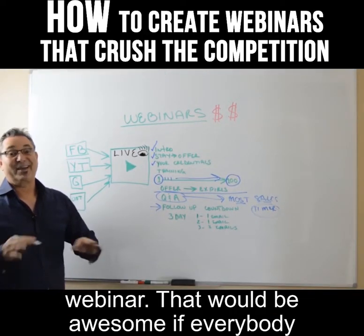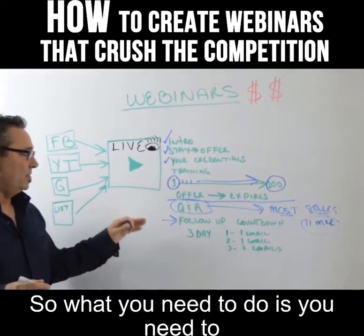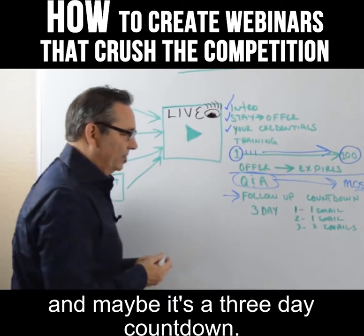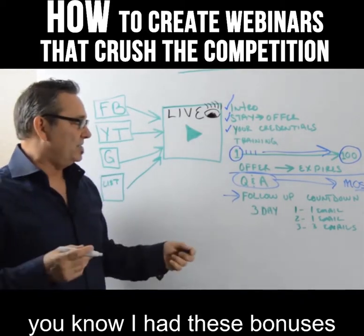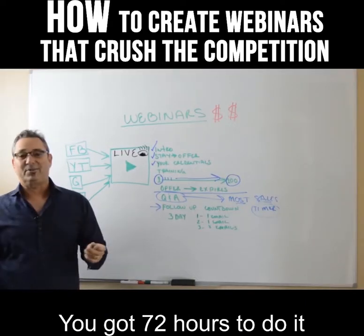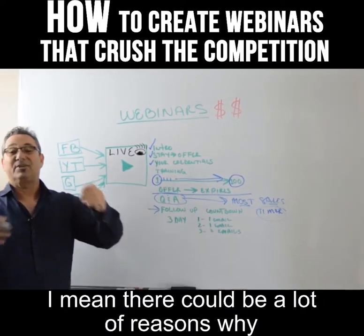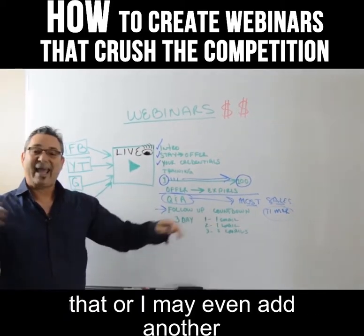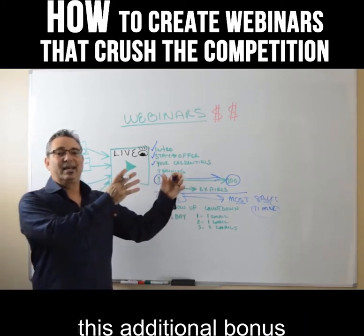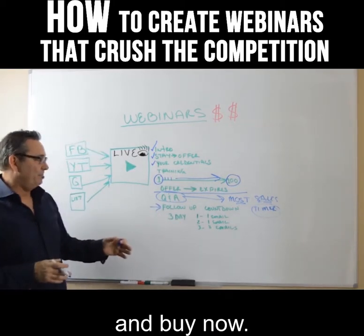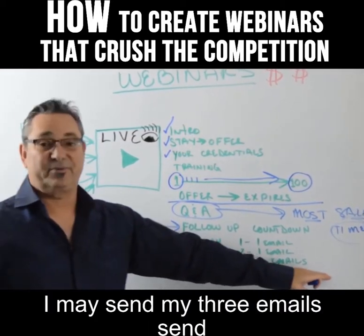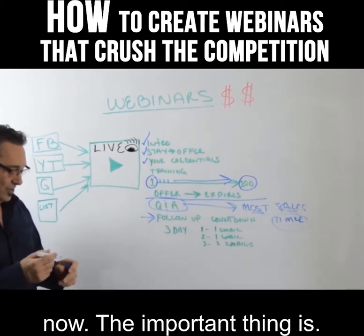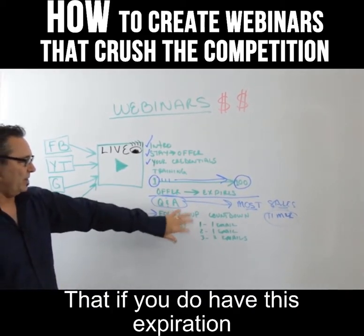Not everybody is going to buy on the webinar, so you need to do a follow-up. A good approach is a three-day countdown sequence. On day one, remind them about the bonuses they'll miss and that they have 72 hours — and the price is going up. On day two, send another email and maybe add an extra bonus for buying now. On day three, send three emails: one in the morning, one in the afternoon, and one a few hours before midnight saying the offer is expiring.